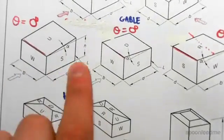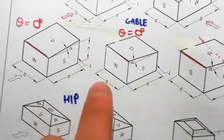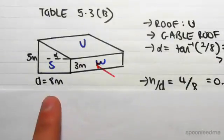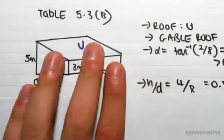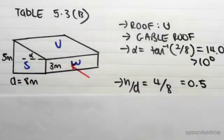You can see in all these figures, d is the length of the side wall the wind's hitting. This is the side wall, so that's d in all the cases. So the length of our side wall was 8 meters, so 4 and 8, we have an h on d of 4 and 8 of 0.5.